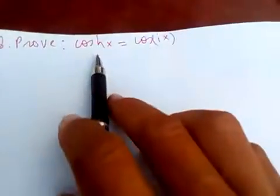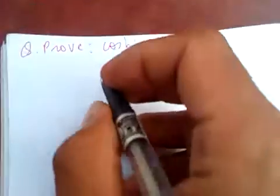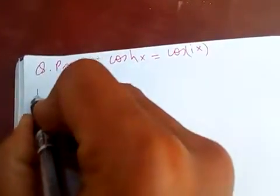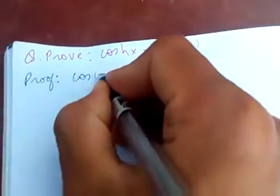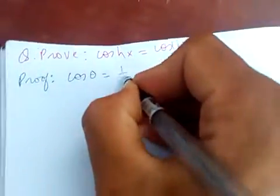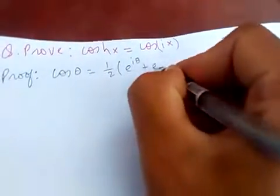Hello friends, today I'm going to show you that cosh(x) = cos(ix). First, let's define cos θ: cos θ = (1/2)(e^(iθ) + e^(-iθ)), which is Euler's formula.